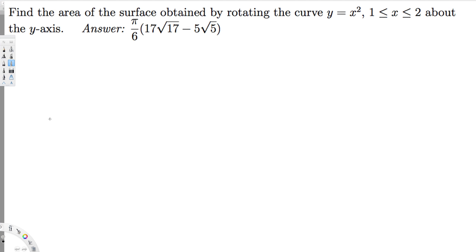Hey, what's going on guys? Let's do this problem right here. The question is asking: find the area of the surface obtained by rotating the curve y equals x squared from one to two about the y-axis. Let's see how we can find it.